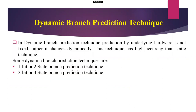So what is called a dynamic branch prediction technique? In dynamic branch prediction technique, prediction by the underlying hardware is not fixed. Rather, it changes dynamically. This technique has higher accuracy than the static technique. In static technique, before compilation time, we have to predict the value. But in dynamic prediction, during running time, the value is changed. That is the concept of dynamic prediction.